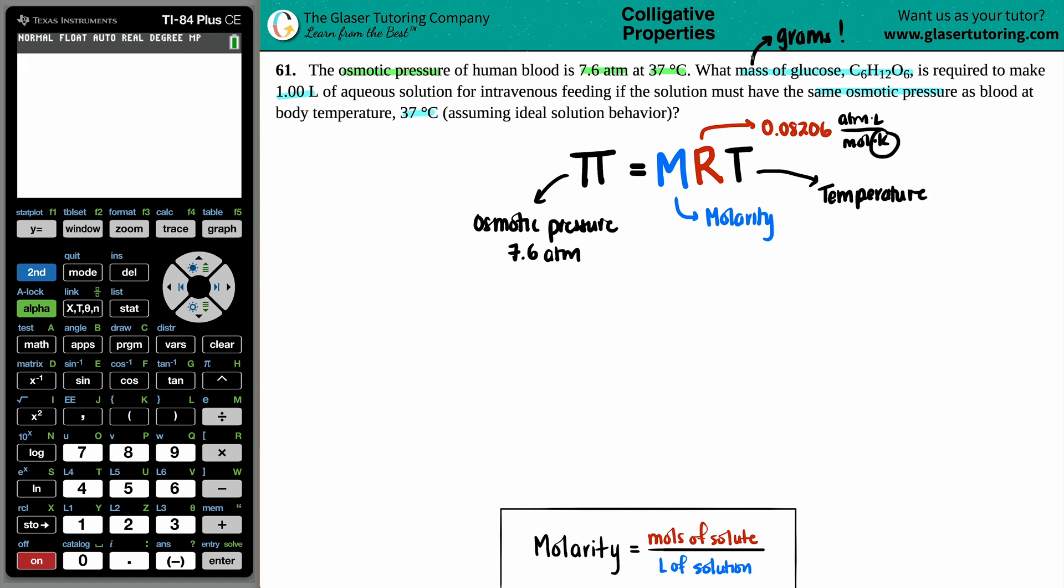According to the R constant, the temperature has to be in Kelvin. But they gave us 37 degrees Celsius. That's okay - we can convert from Celsius into Kelvin. Celsius to Kelvin, all you do is plus 273.15. So 37 plus 273.15, I get 310.15 Kelvin.